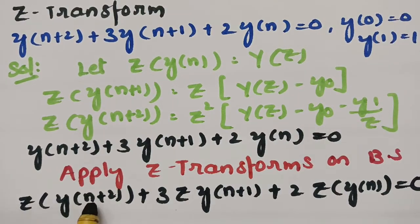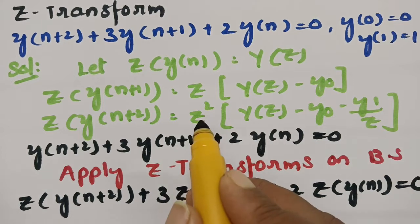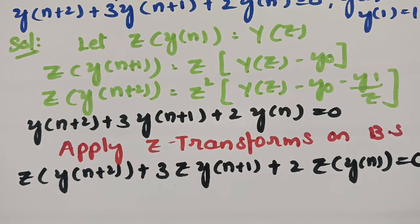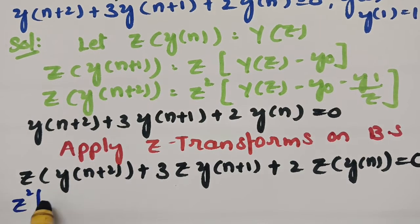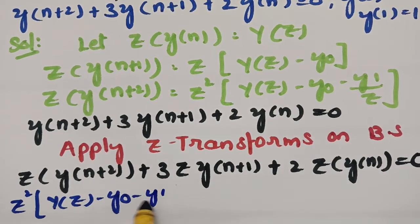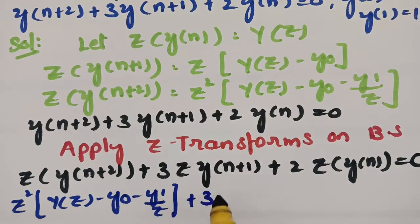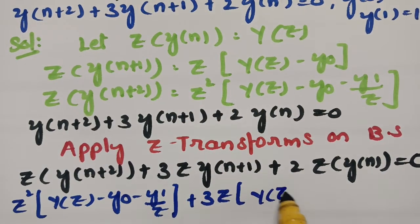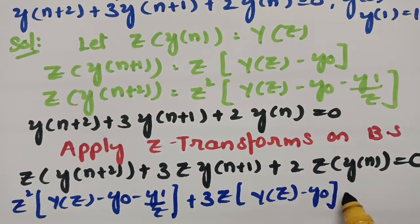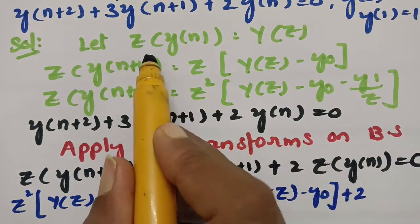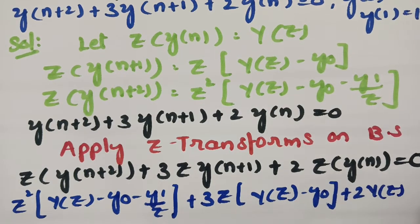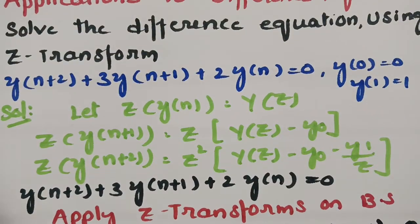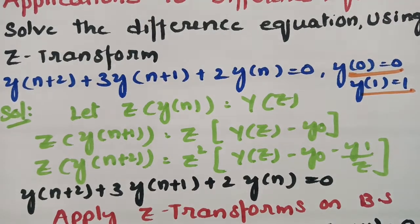Next we have Z-transform of y(n+2) is nothing but Z²·Y(z) minus y(0) minus y(1)/Z. Substituting here: Z²·Y(z) minus y(0) minus y(1)/Z, then 3 times Z-transform of y(n+1) which is Z·Y(z) minus y(0), plus 2 times Y(z) equals 0. The conditions given are y(0) = 0 and y(1) = 1.